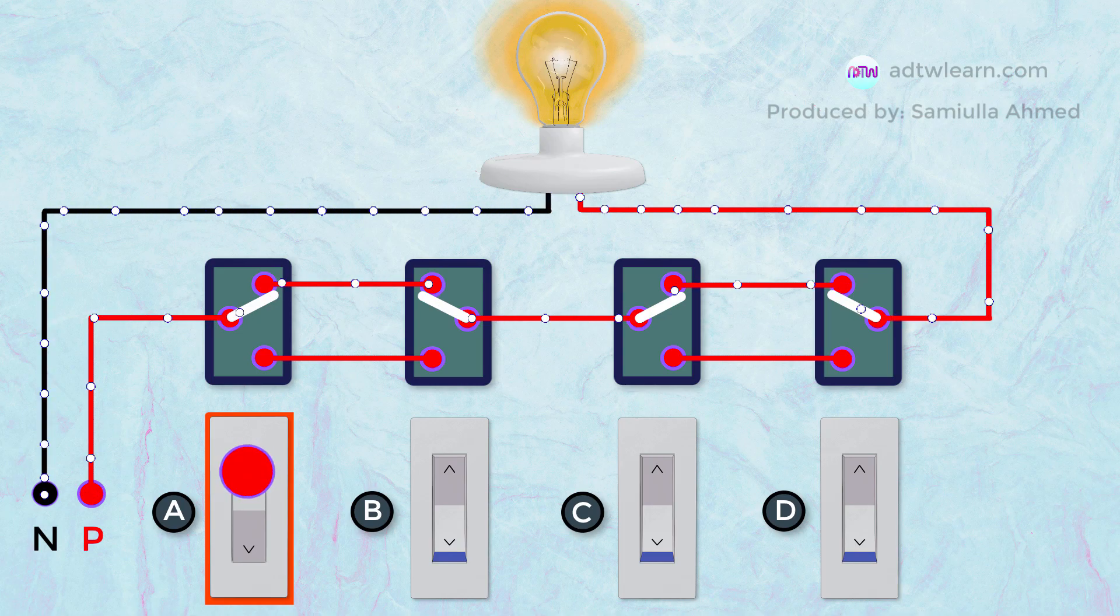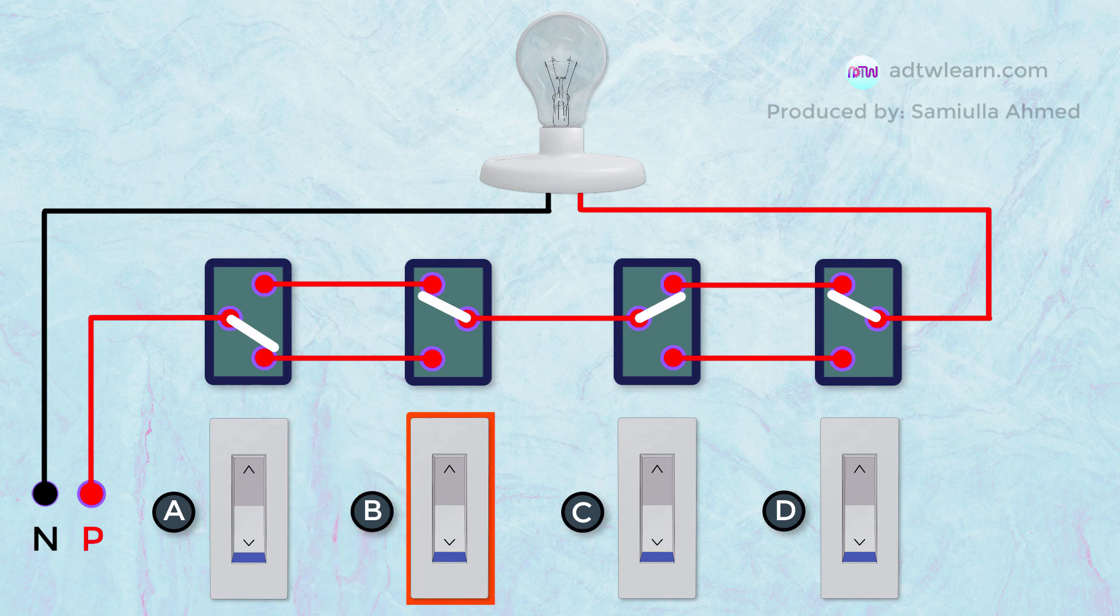Let's turn it off. When we press switch B again, the bulb glows.